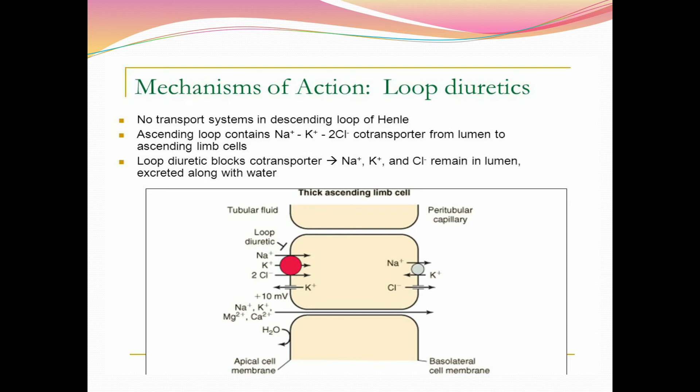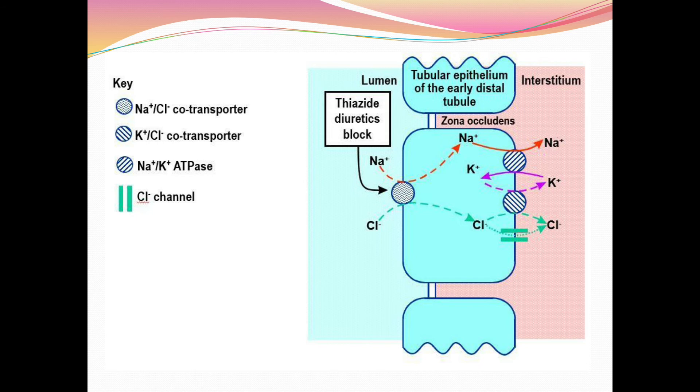The lumen is the inside of the nephron — the ascending limb of the loop of Henle contains sodium, potassium, and chloride. Normally these are reabsorbed from the lumen into the blood capillaries. However, when a loop diuretic drug is given, it inhibits the transporter, blocking reabsorption.